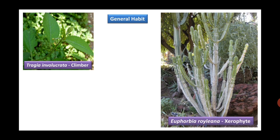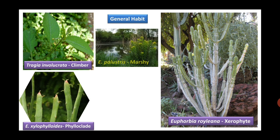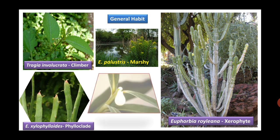Euphorbia royaliana has a xerophytic nature. Some plants produce phylloclade-like modifications of stem, for example Euphorbia xylophyloides. Some plants are marshy, like Euphorbia palustris. Usually all the plants contain milky latex in them.